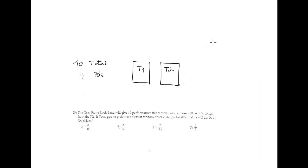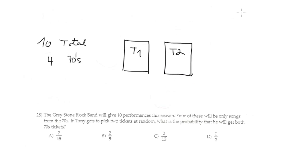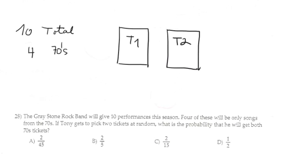The Greystone Rock Band will give 10 performances this season. Four of these will be only songs. We have 10 performers in total, and 4 is only the song, and we have 2 tickets. In this case we have 2 events, and they are dependent, not independent. They are dependent because when you pick the first ticket...